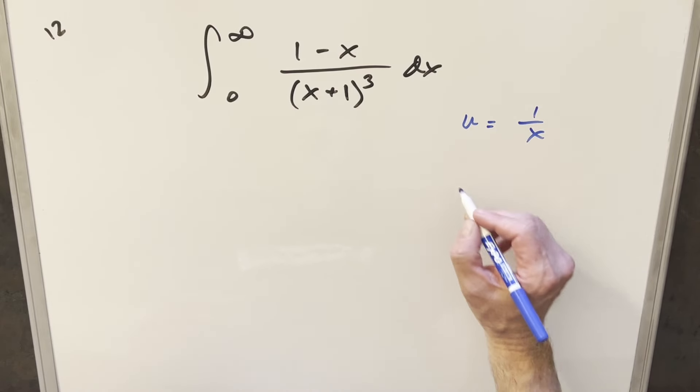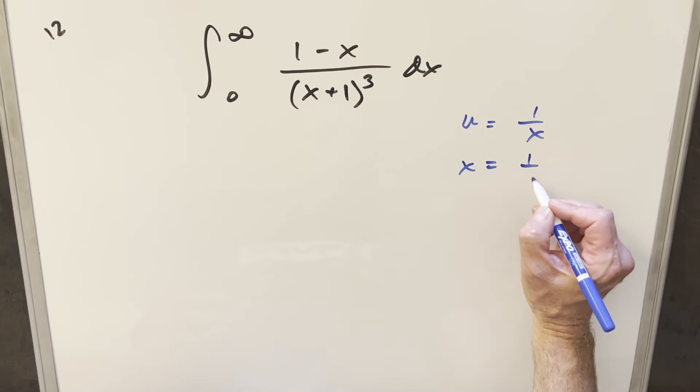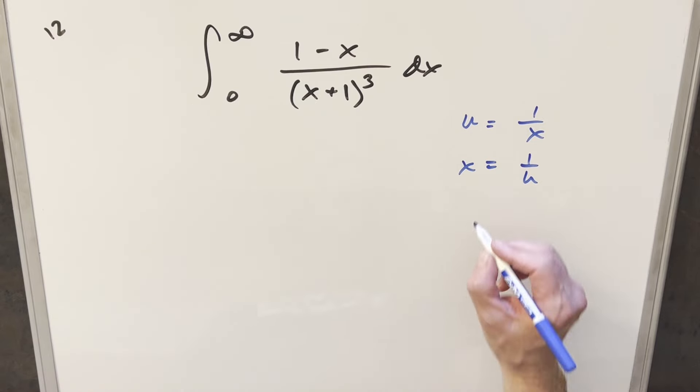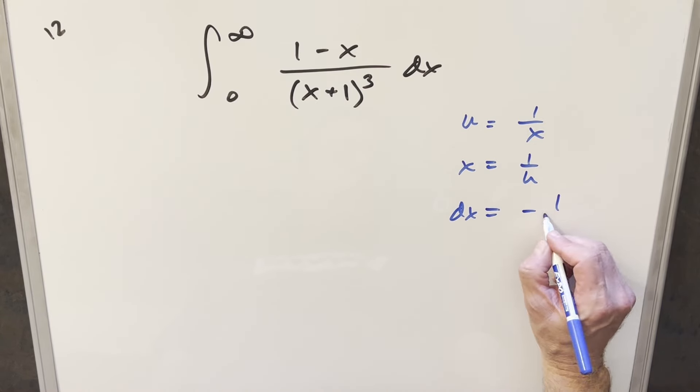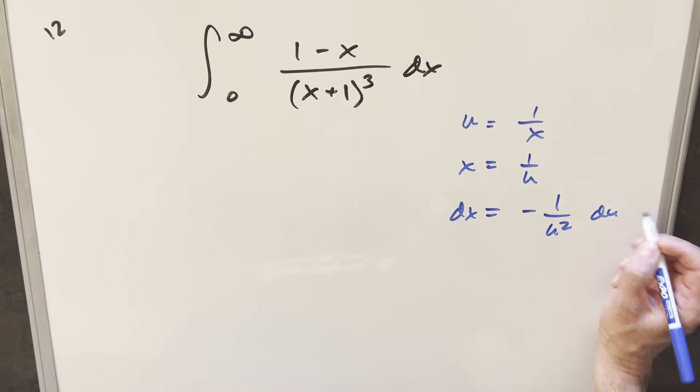So then let's get a value for x. Solving for x, we get x equals 1 over u. And then take the derivative. dx is going to be minus 1 over u squared du.